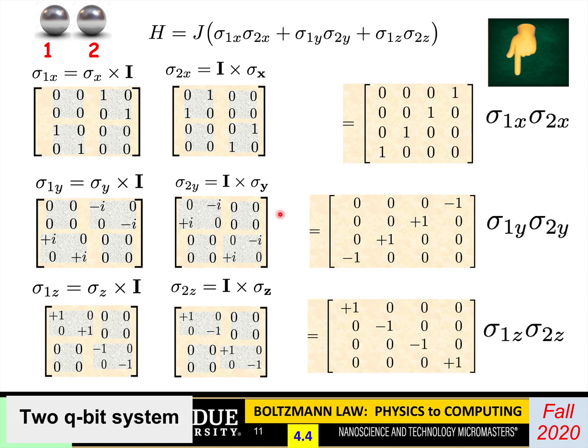And then you can do the sigma_1z, sigma_2z, again, exactly the same principle. And this one has all the nonzero terms on the regular diagonal. It's plus 1, minus 1, minus 1, and plus 1.